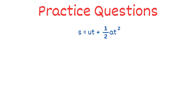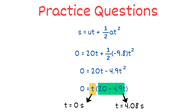Plugging in the values: 0 equals 20T plus 0.5 times (−9.8) times T squared. Solving this equation gives two values of T: one is 0 seconds, and the other is approximately 4.08 seconds. Since T equals 0 is when the ball was thrown, we disregard that value. Therefore, the total time of flight for the ball is approximately 4.08 seconds.